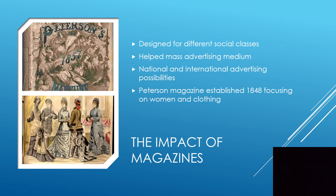Through the telegraph, we also see the impact of magazines. The Peterson magazine, established in 1848, focused on women and clothing, showing how a mass medium was truly helping to sell a certain product. With the help of the telegraph, someone from Europe could send a message to North America describing their product, and through a magazine they could sell that style to make a profit. They made magazines based on different social classes, and it was a mass advertising medium that helped connect national and international advertising possibilities.